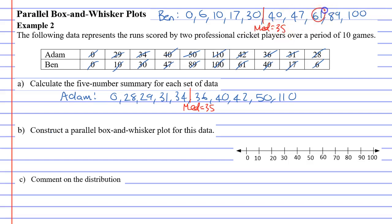And then we've got our quartiles. So quartile three is 61, and quartile one is 10 for Adam. Quartile three is 42, and quartile one is 29. And then we've got our upper and lower extremes, so lower extreme is 0, upper extreme is 110 for Adam. And for Ben, we've got 0 and 100.